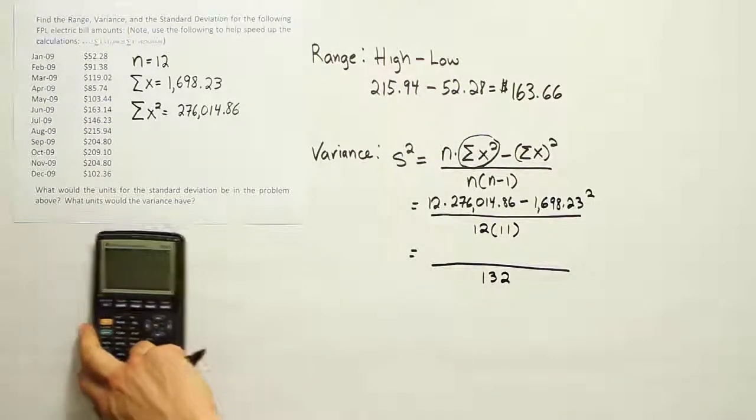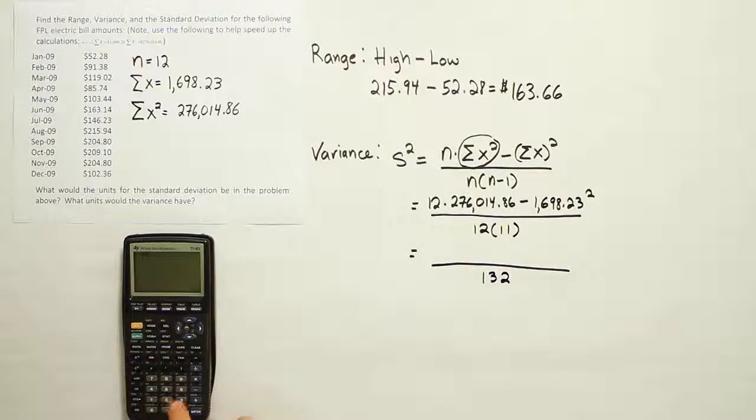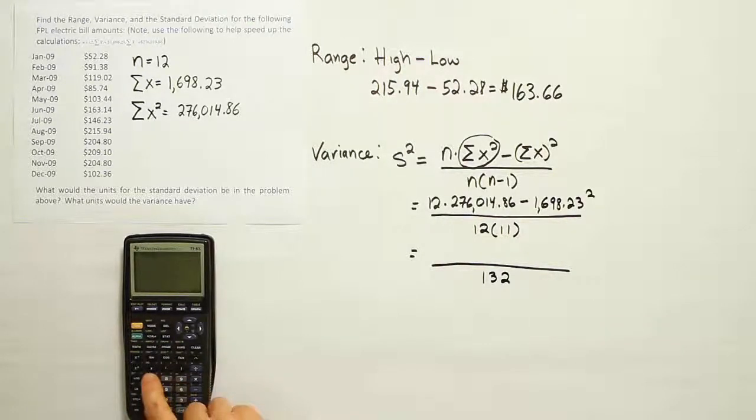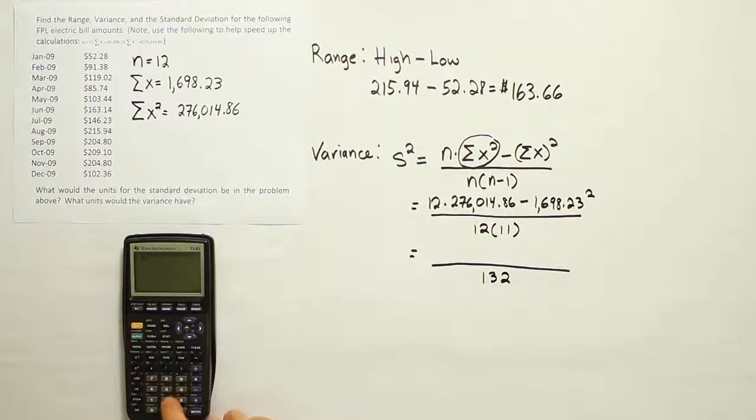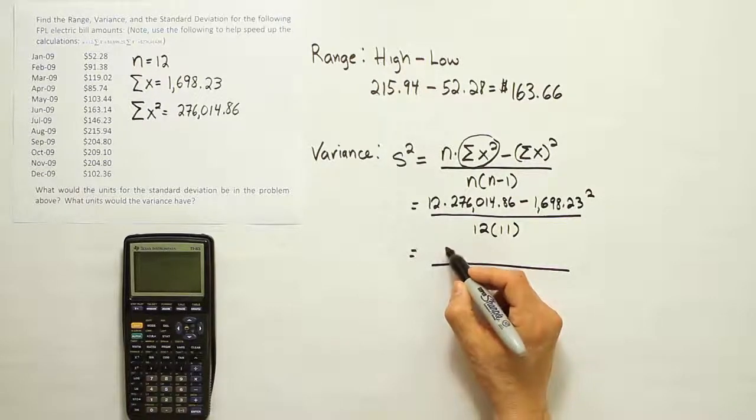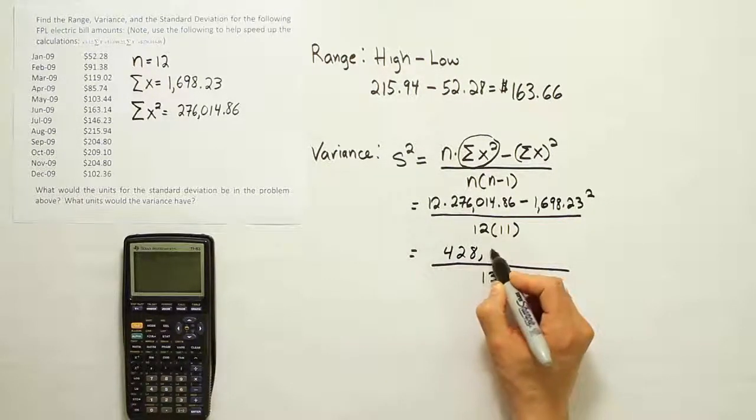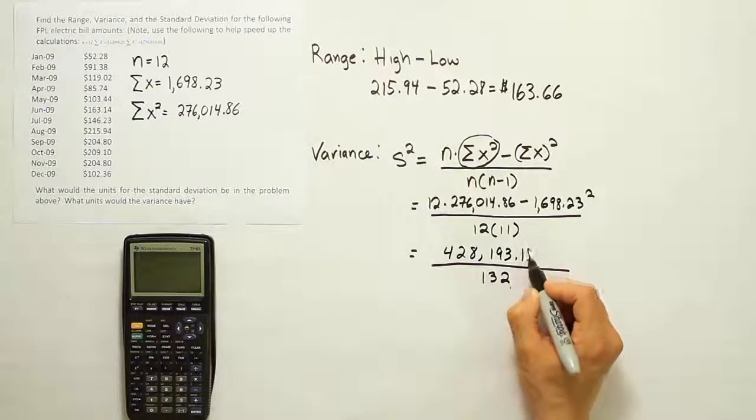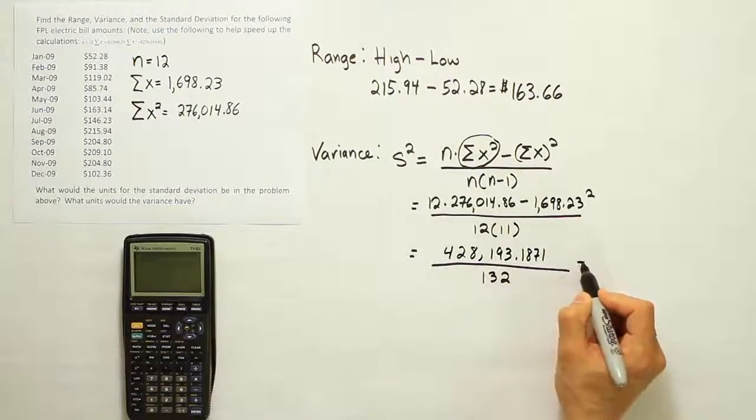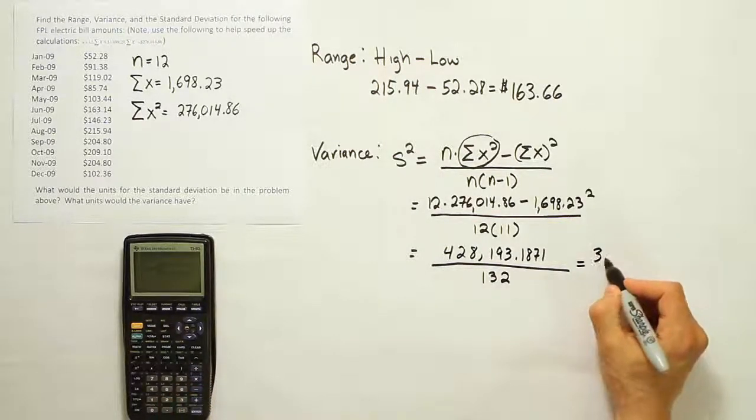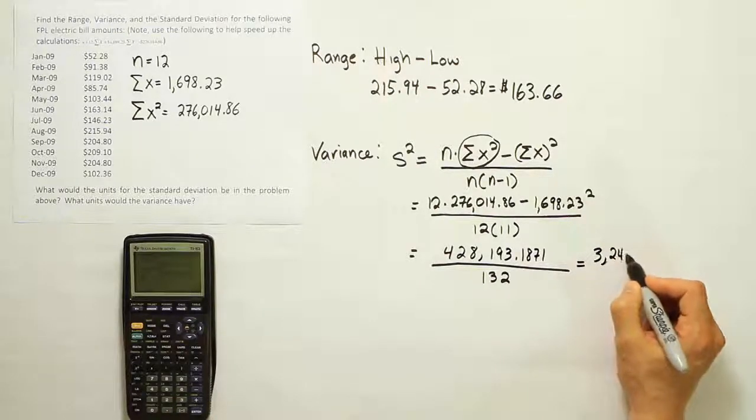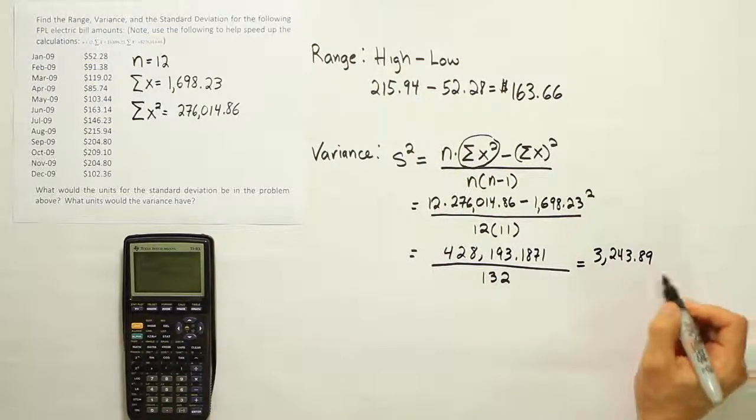Let's use the calculator to get the top half of it. So we'll have 12 times 276,014.86 minus 1,698.23 squared. When you finish all of that at the top, you end up with 428,193.1871. And then after performing our division there, we end up with 3,243.89. I'm going to round it there.